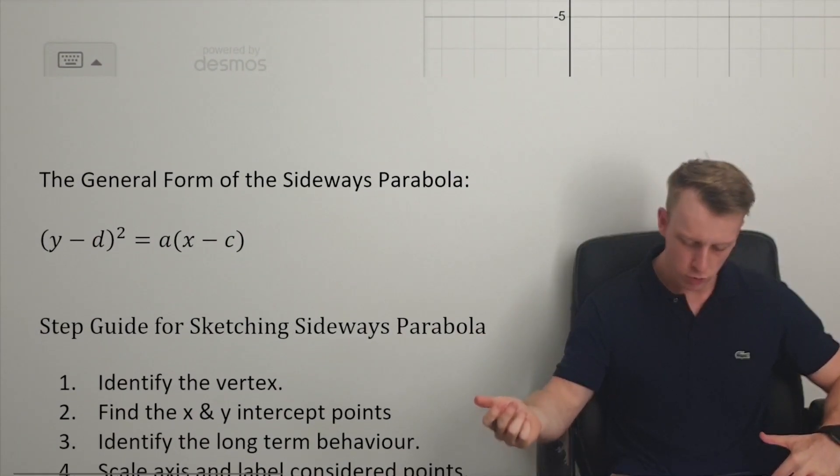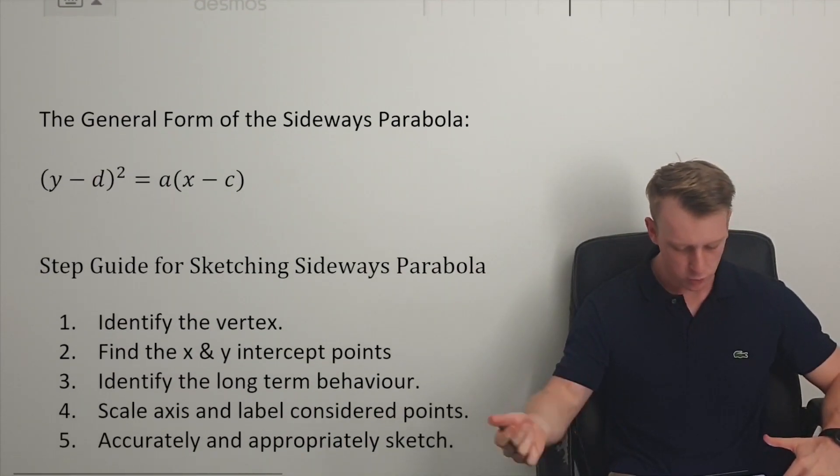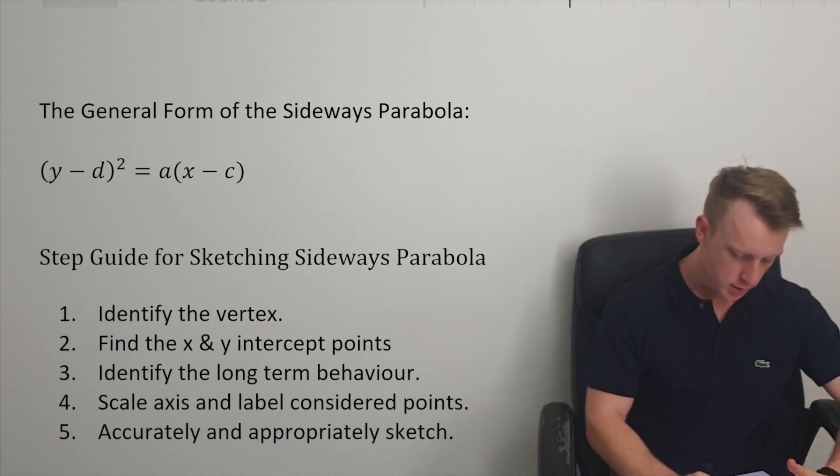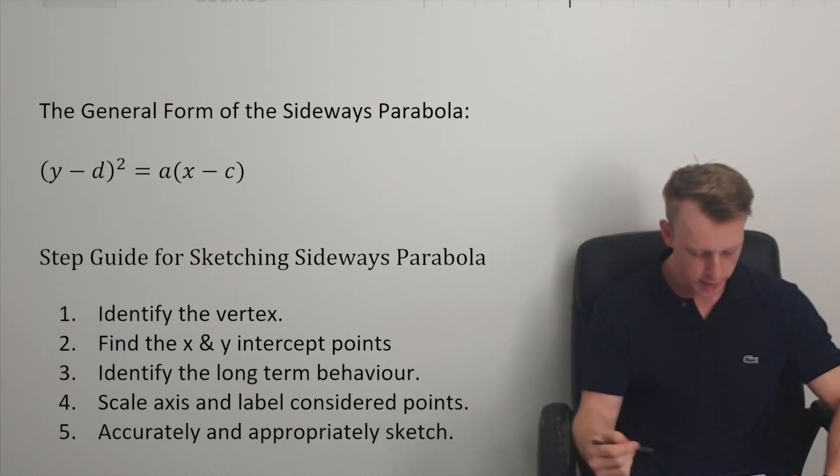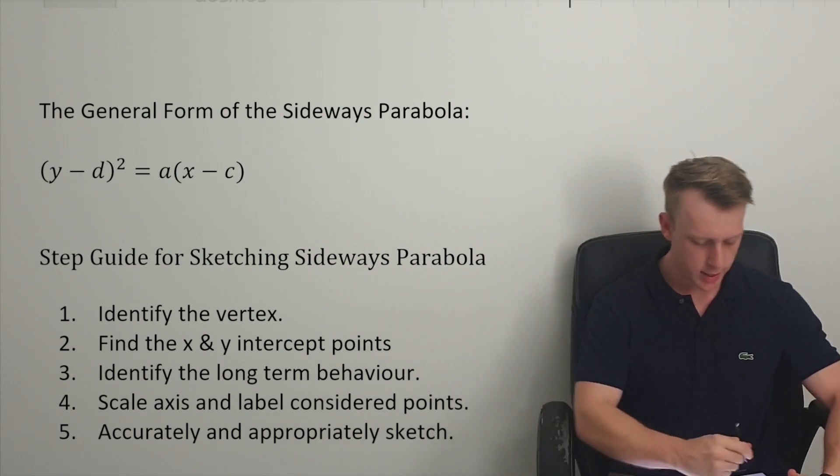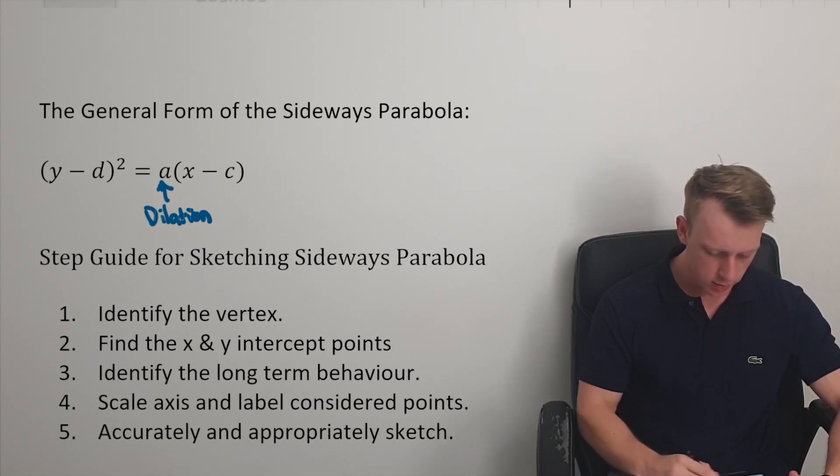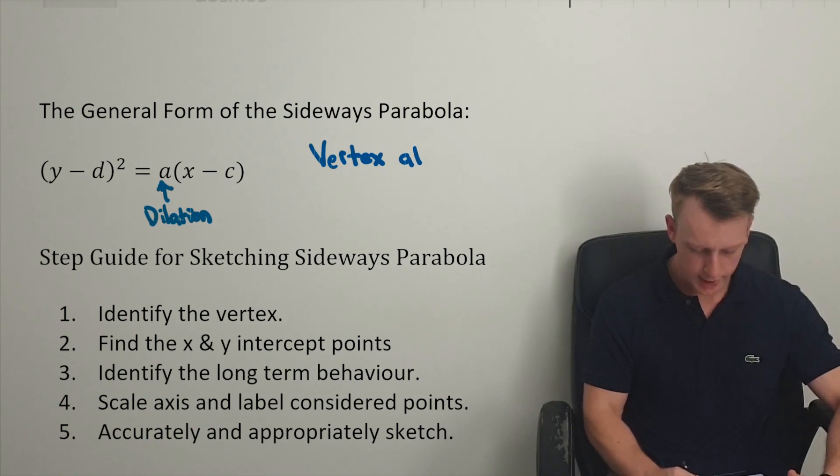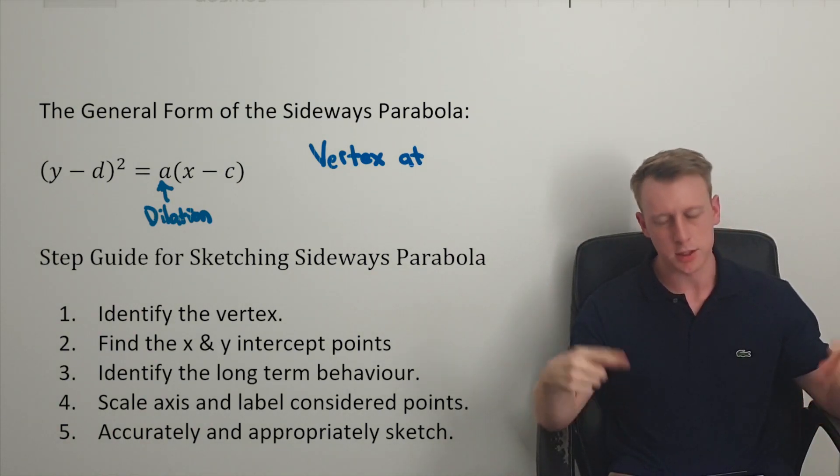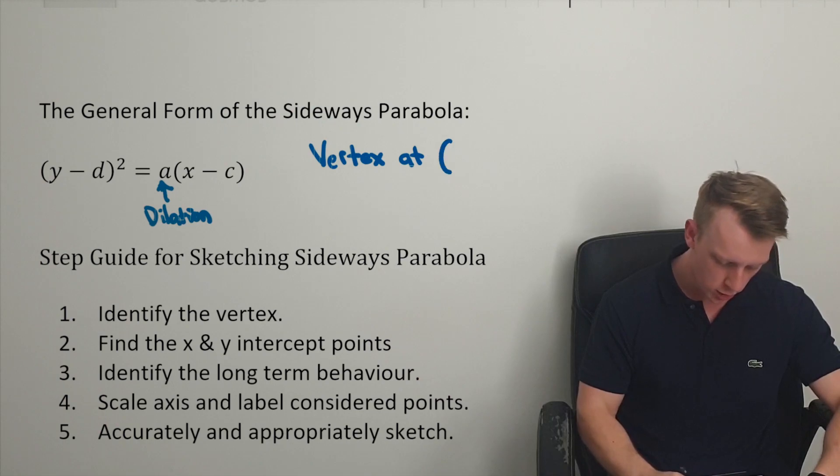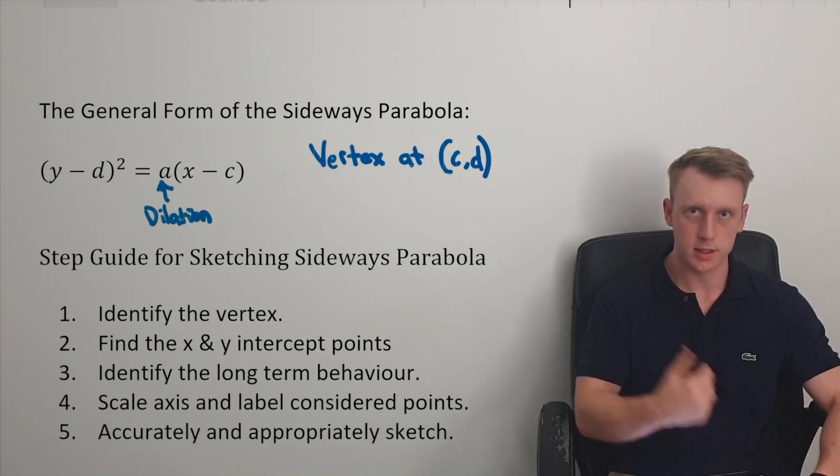Again, there is a general form and there is a guide for sketching this. So we've got y minus d squared is equal to a times x minus c. This guy here, this is our dilation factor. And we've got what we call a vertex, which is essentially the turning point of the sideways turning point, which occurs at c, d. x, then y.